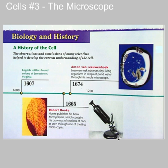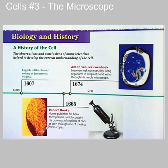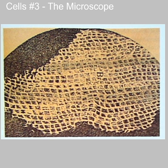In the 1600s, the microscope was developed further and led to some of the early discoveries. Robert Hooke used this microscope to make some of his famous drawings of the first cells. These are drawings from his notebook of cork. Robert Hooke is the person who gave us the name 'cells.' When he looked through his microscope and saw all these little structures, they reminded him of cells in a jail, and that's where he got the name.